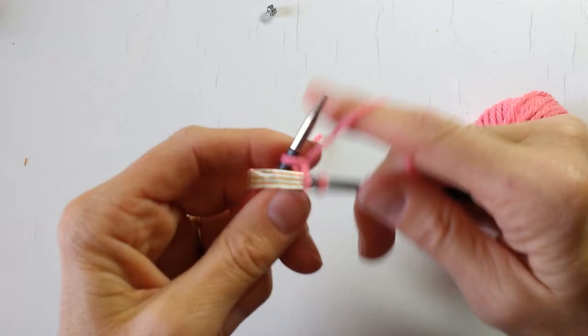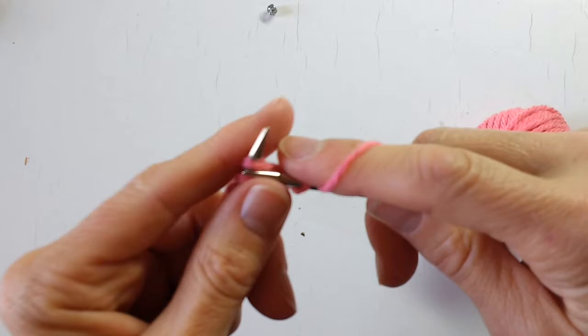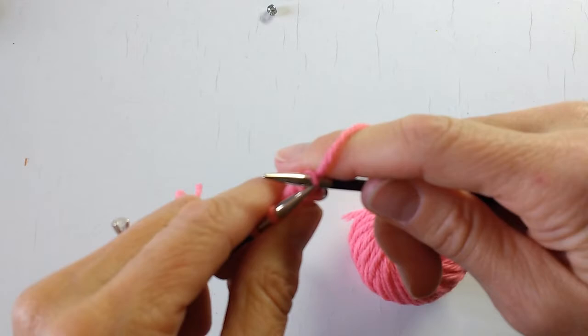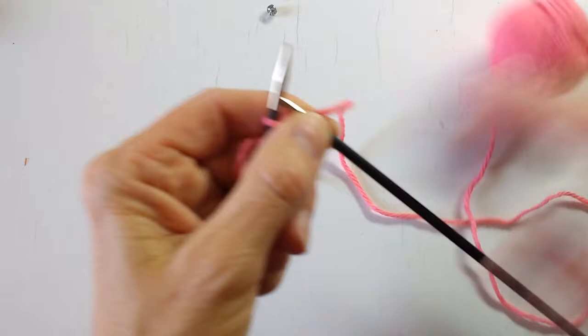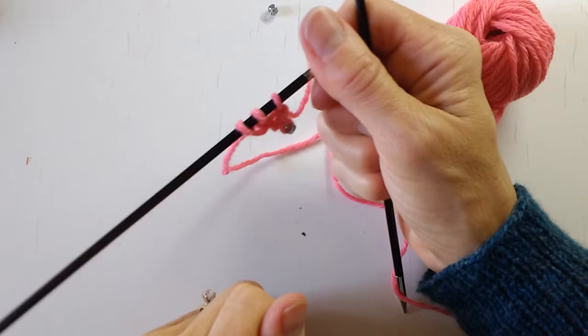Now we are going to bind off two stitches. So knit one, bind off. Knit two, bind off. Okay, so we started with five and now we have three. Seems like we're going in the wrong direction, but now we're going to cast on four.